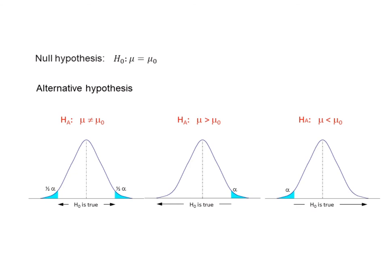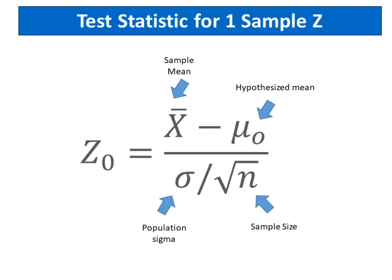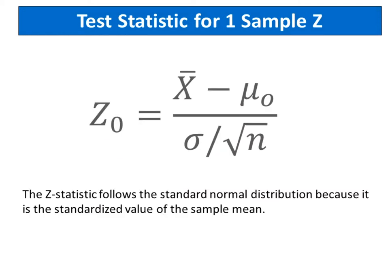The test statistic for 1 sample Z is shown below. X bar is the sample mean. Mu sub 0 is the hypothesized mean. Sigma is the known population standard deviation and N is the sample size. The Z statistic follows the standard normal distribution because it is the standardized value of the sample mean.